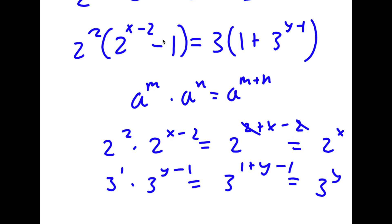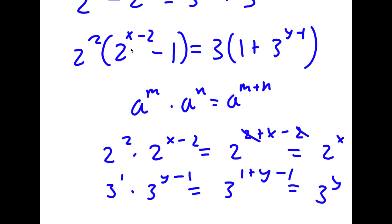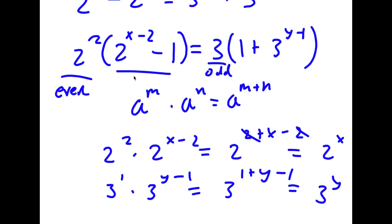Notice that 2 squared is an even number, and 3 is an odd number. Now 2 to the power of (x minus 2) is even, and an even number minus 1 is odd. Also, 3 to the power of any number is odd, and an odd number plus 1 is even. So I have an even times an odd equal to an odd times an even.